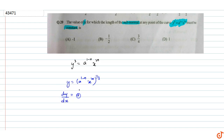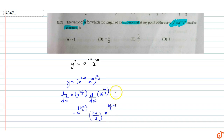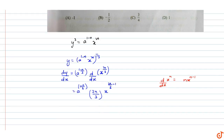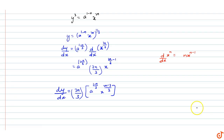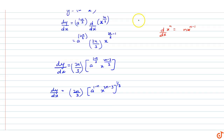dy/dx equals a^(1−n)/3 — the constant stays — and we differentiate x^(2n/3), which gives (2n/3) · x^(2n/3 − 1). So dy/dx = (2n/3) · a^((1−n)/3) · x^((2n−3)/3), which equals (2n/3) · [a^(1−n) · x^(2n−3)]^(1/3).